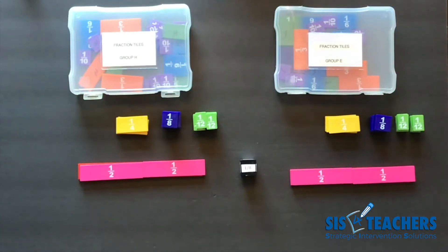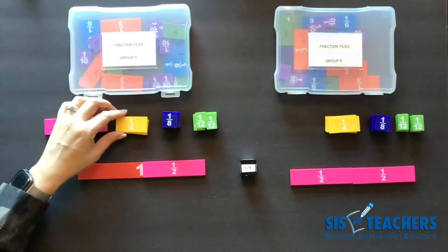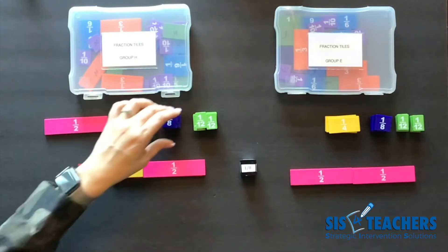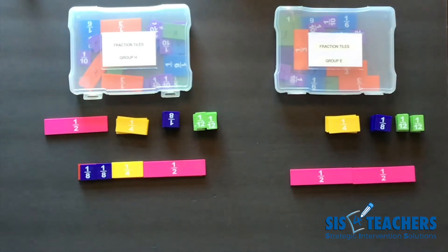I'm going to go ahead and go first. I rolled 1/8. I am going to choose to not pass, but I'm going to fill and exchange my 1/2 with an equivalent piece, which is 1/4 and 2/8. My partner's going to roll.